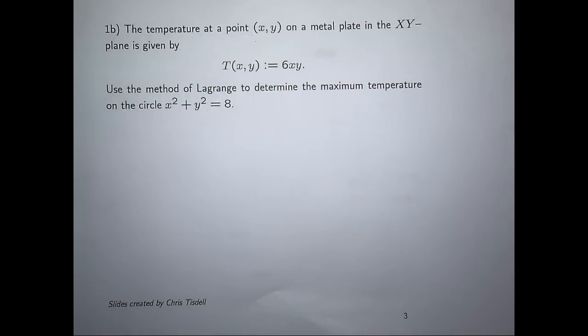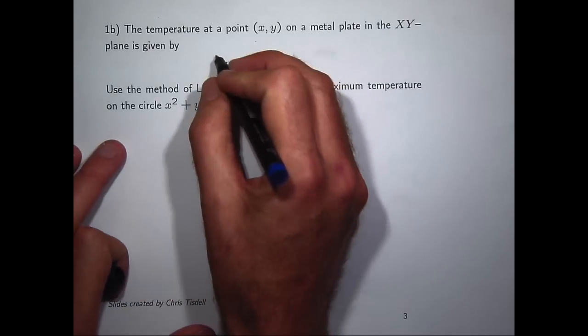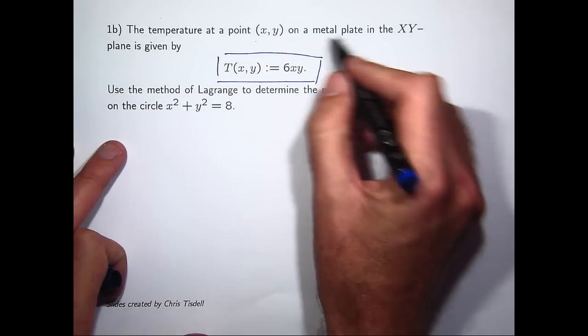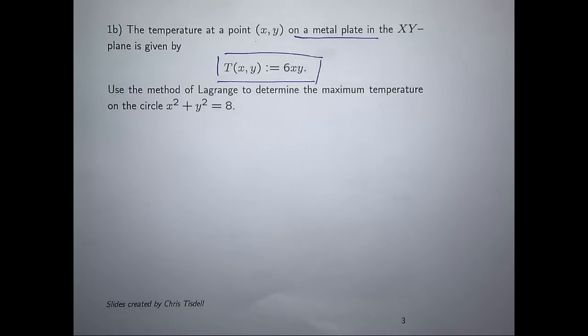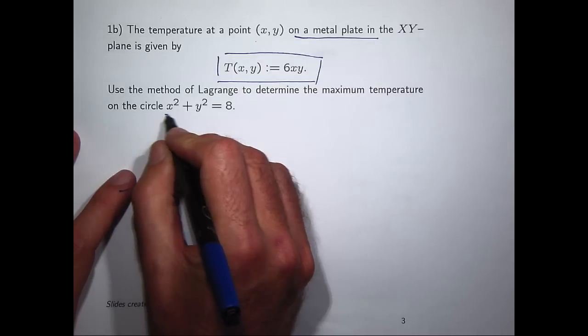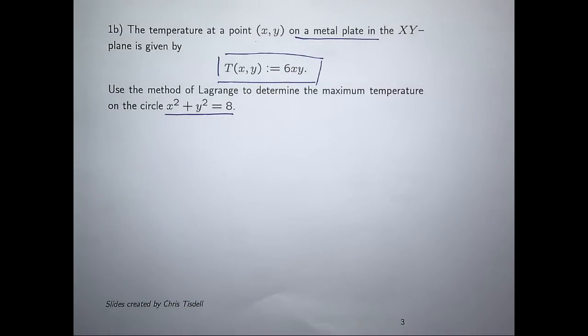So here's a review question involving the method of Lagrange multipliers. We've got a temperature function given by T, and you've got some metal plate sitting in the XY plane. At each point in that plate, you have a temperature associated with each point. We're asked to use the method of Lagrange multipliers to determine the maximum temperature when you restrict the points to lie on the circle x squared plus y squared equals 8.